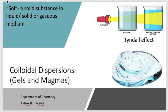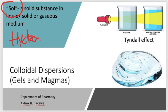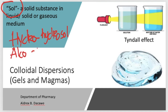We have the term 'sol,' which is a general term to designate a dispersion of a solid substance in a liquid, solid, or gaseous medium. However, more often than not, it is used to describe the solid-liquid dispersion system. To be more descriptive, some people add prefixes such as 'hydro' for water, forming the term 'hydrosol' for dispersions containing water as the dispersing medium. Others use alcohol as their dispersing medium, adding the prefix 'alco' to form the word 'alcosol.'